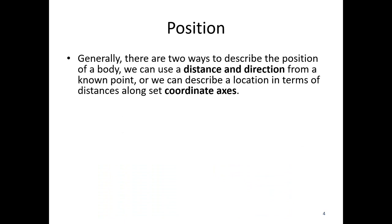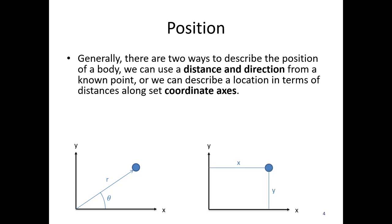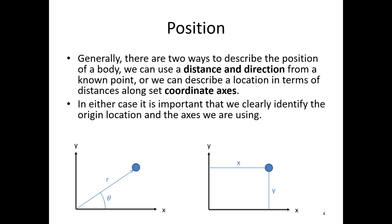Generally, there are two ways to describe the position of a body. We can use a distance and direction from a known point, or describe the location in terms of distances along set coordinate axes — an x and y position usually. We can have a distance r and an angle theta, drawing a vector to the position from the origin. Alternatively, we describe the x and y location in the coordinate axes. In either case, it is important to clearly identify the origin point, because if we don't know where we're measuring from, we won't know where we are.